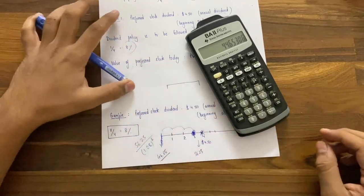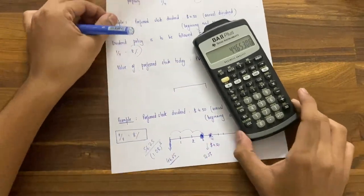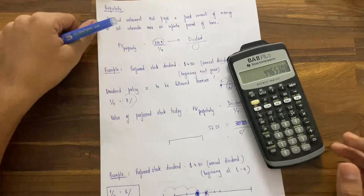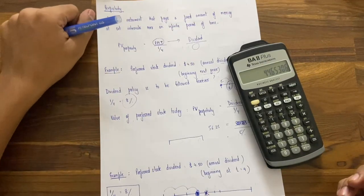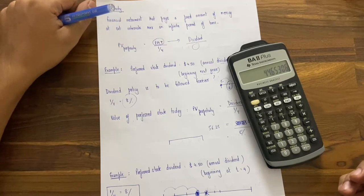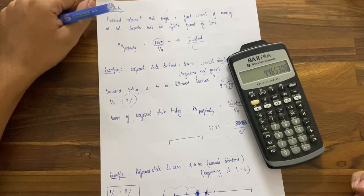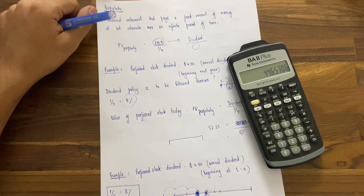So this is how you can figure out the value of perpetuity. It is pretty simple. You are able to calculate the value of perpetuity in a very simple manner, whereby you have the dividend in the numerator and you have the periodic interest rate in the denominator. And you can find out the present value, and that present value should be the value of a preferred stock.